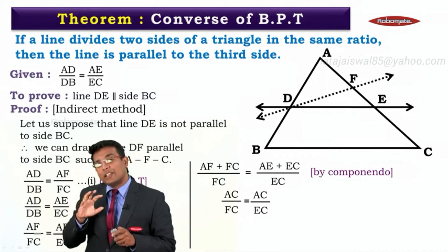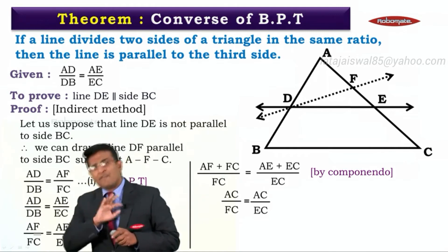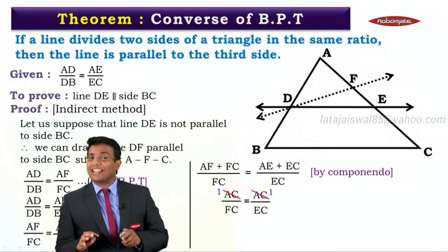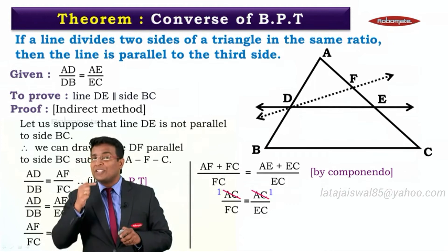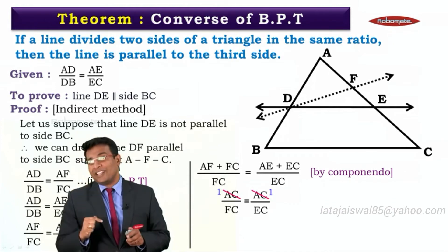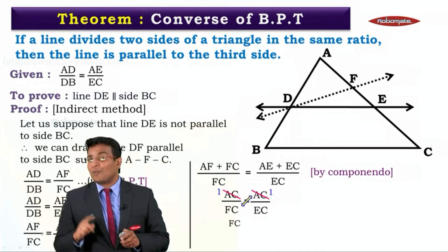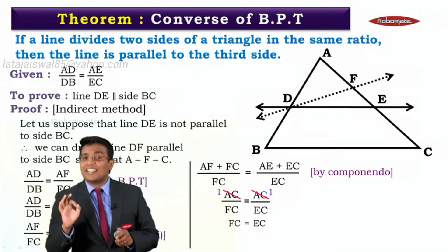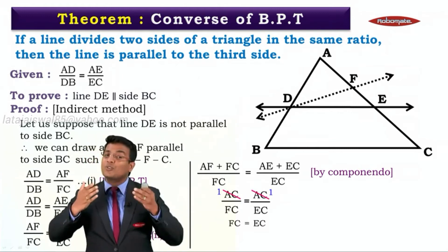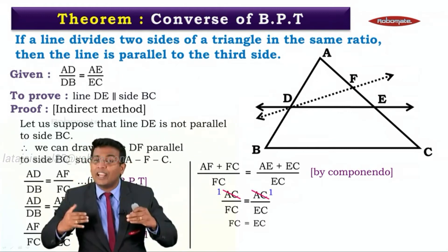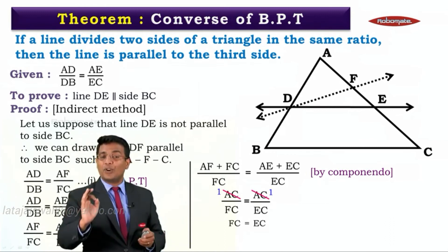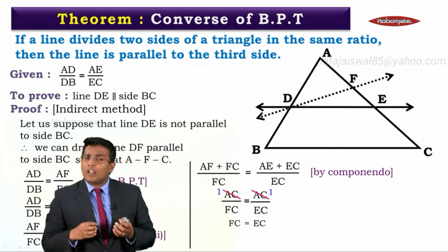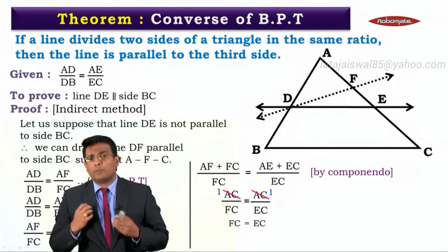Now we can simplify this ratio — the numerators AC cancel on both sides, and we get 1 upon FC is equal to 1 upon EC. When we cross multiply, we get FC is equal to EC. Those ratios are simplified and we end up with FC = EC.